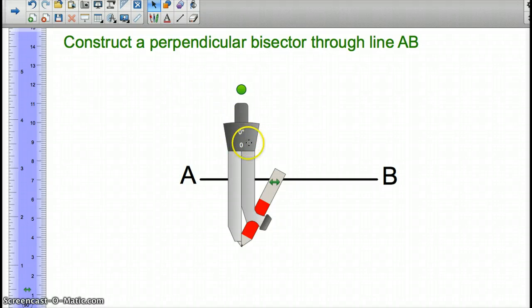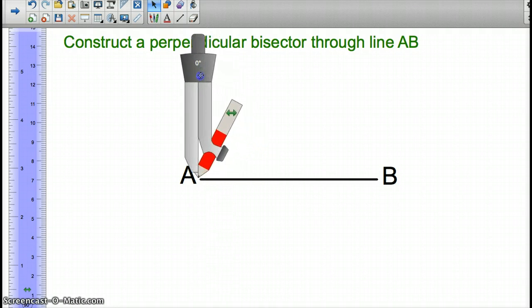So we're going to start off with our compass, and we're going to take the point of the compass, and we're going to line it up at point A. And then we are going to stretch out the arm of the compass.